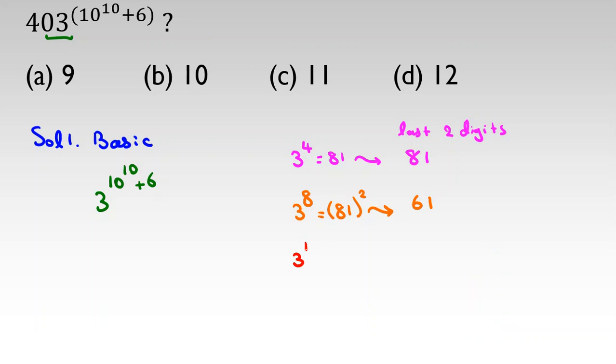In the next step, I will calculate 3 to the 16. By power rule, I can say it is 3 to the 8 squared, because a to the m to the n equal to a to the m n. So 3 to the 8 squared will be 61 squared. If I calculate 61 squared like the previous one, it will be 21. So let's calculate 3 to the 32. Similarly, we can say 3 to the 16 squared. 3 to the 16 equal to 21 squared, which is 441. So we can say it's 41.